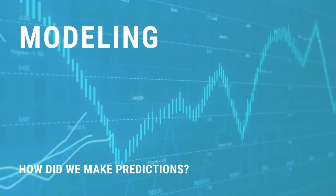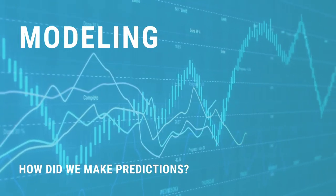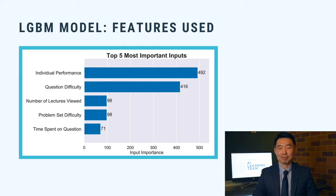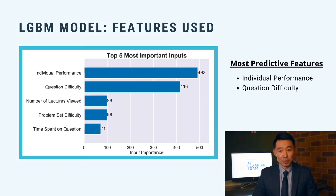Yong Liang will now talk about our predictive model. Our best model is a Light Gradient Boosting Machine, also known as LGBM. The visual here depicts the top five inputs that impact our model's predictions. The graph shows the number of times each feature has been used in the model. Since individual performance and question difficulty are the most important inputs, we only use these two in our model.